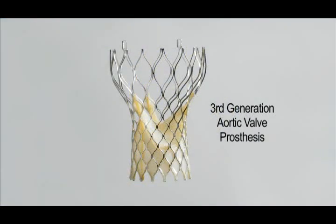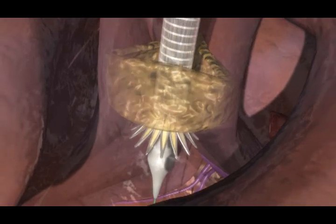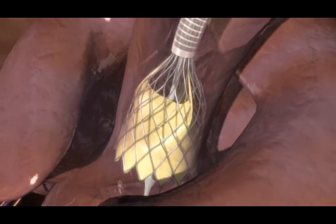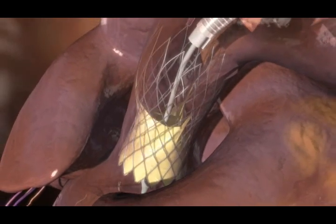The third generation core valve revolving prosthesis is designed specifically for percutaneous application and is composed of pericardial tissue which is sutured to the frame in a manner that enhances flow and durability.